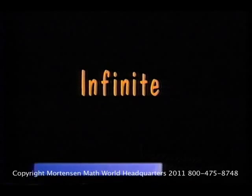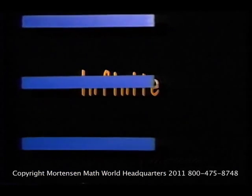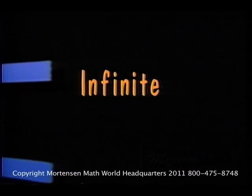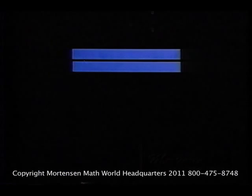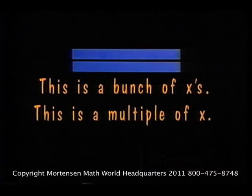X counted once, X counted twice, X counted three times are all multiples of X. A multiple of X is a bunch of X's. This is a bunch of X's. This is a multiple of X.